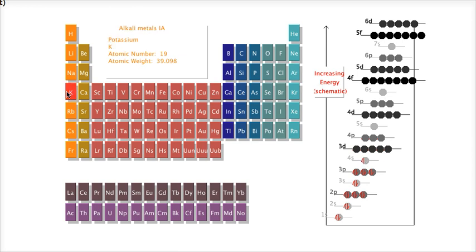So potassium would tend to lose that electron. And that would make it a positive potassium ion, a cation of plus 1. Same with rubidium.